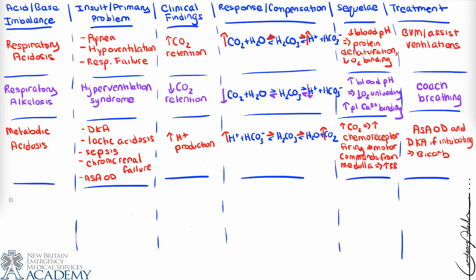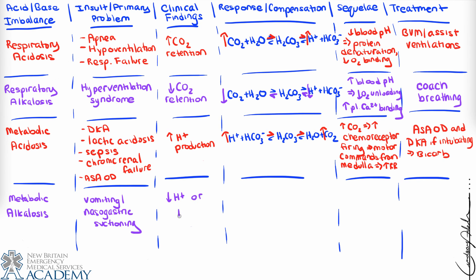The last acid-base problem is metabolic alkalosis, which is the least likely to be encountered in the pre-hospital setting. It may be associated with severe vomiting — where stomach acid is lost — or nasogastric suctioning. We can have a decrease in hydrogen ion concentration or an increase in bicarbonate concentration. A decrease in hydrogen ions throws the reaction out of balance, increasing dissociation of carbonic acid into bicarbonate ions and hydrogen ions.